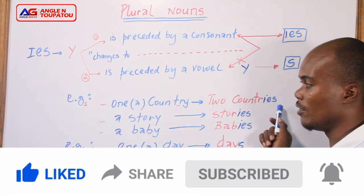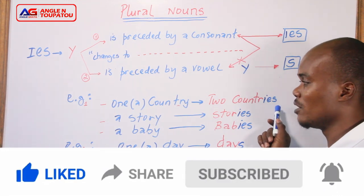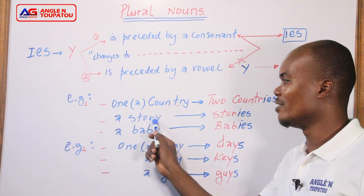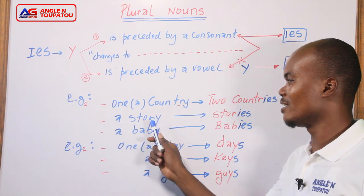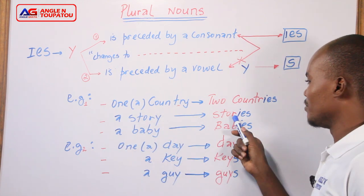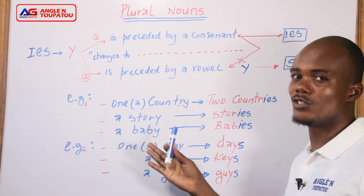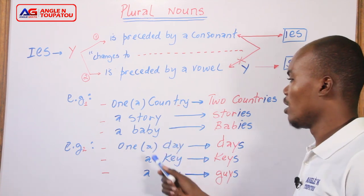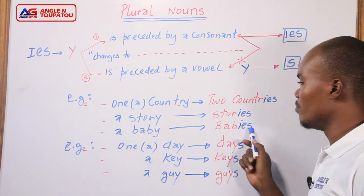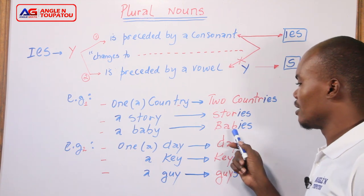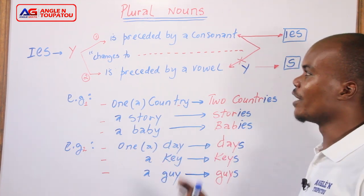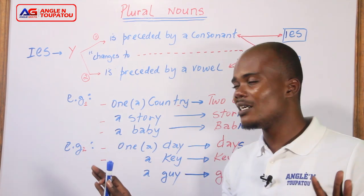When I say one country — mon di yon peyi — le map di de peyi, mwen Y sa deja ge an konson devan, map chanje Y la, IES, map di two countries. Is it clear? Es ke clear? I hope so. A story — es ke Y la pa ge an konson devan? Map di stories — les histoires. A baby, yon bebe, two babies — Y la ge an konson devan. Ok, that's clear.